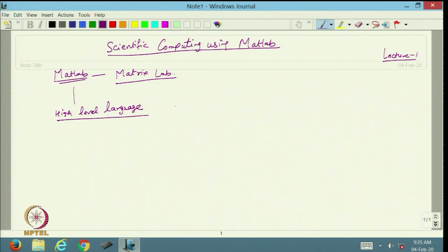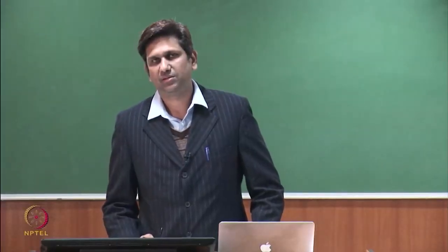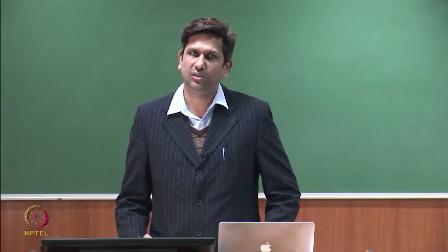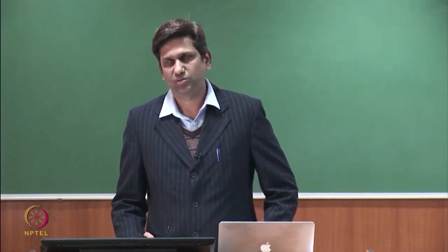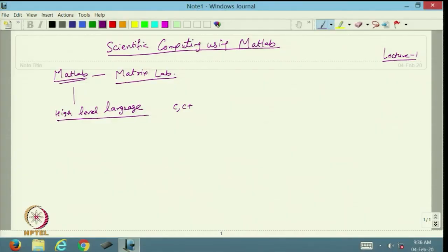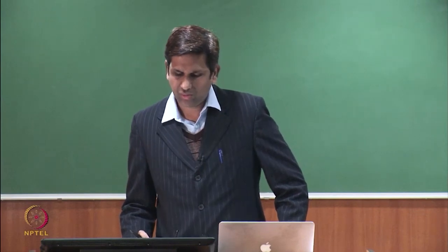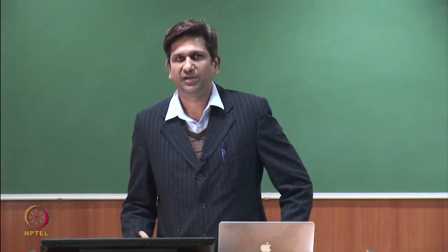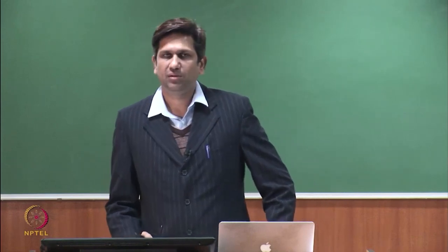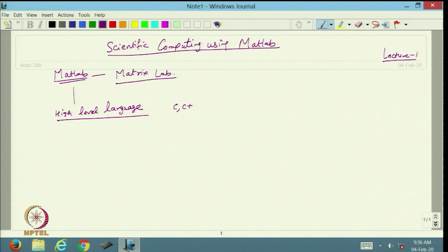A high-level language is like Python, C, or C++, where you write code not in terms of machine language, but in your own language or some specific language. Machine language is always in terms of binary numbers — 0 and 1 — and we are unable to write code in 0s and 1s; that is the low-level language. But in C, Fortran, MATLAB, or Python, we write code in a specific defined language and those codes are very easy to debug and compile. That is called a high-level language.